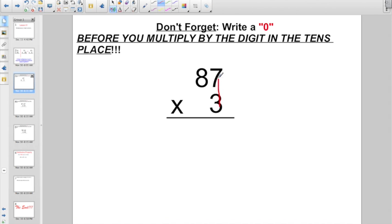Let's go 3 times 7. Everybody knows that. That's 21. I'm going to write down my 1, carry my 2. Next up, I'm going to do the digit in the tens place. 3 times 8 is 24, plus 2 more. That's 26. Are you with me so far? Sure, everybody can do that.